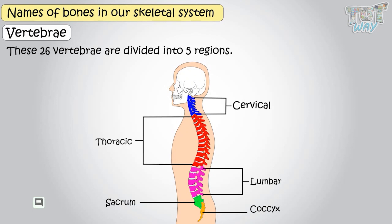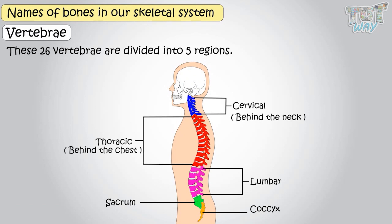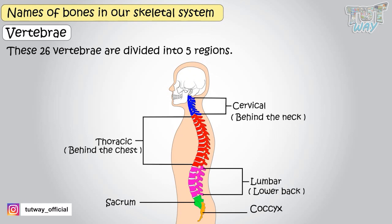The cervical region is behind the neck. The thoracic region is behind the chest. The lumbar region is the lower back. The sacrum and coccyx together form the tailbone.